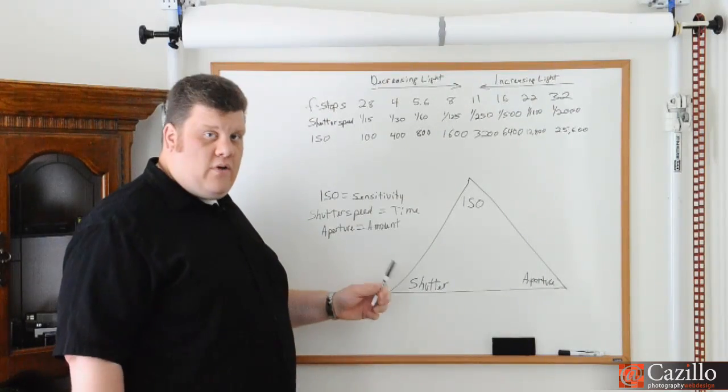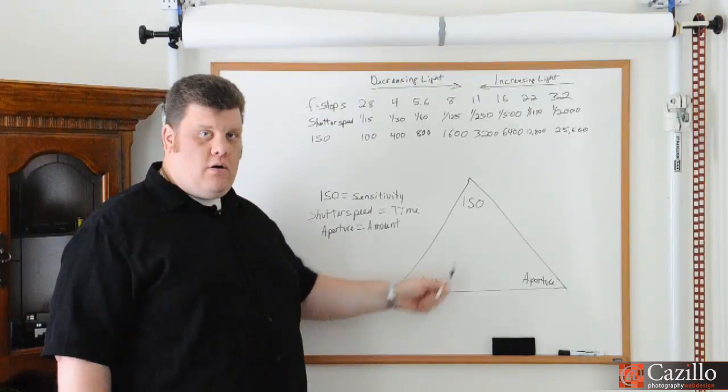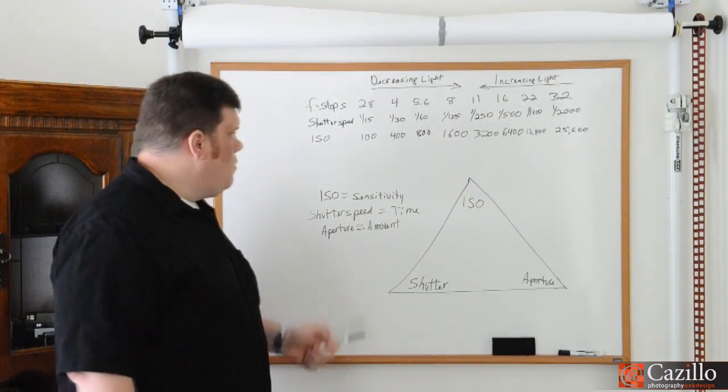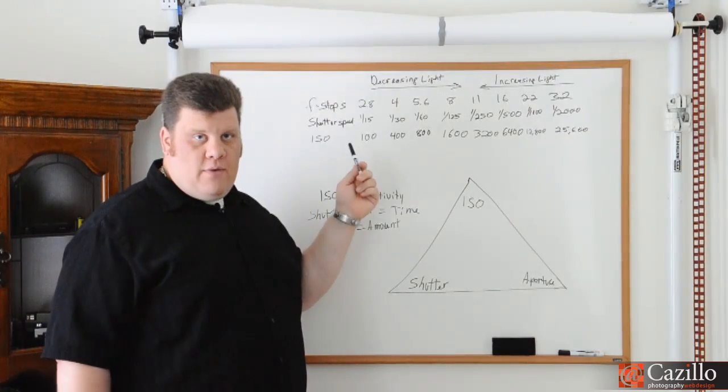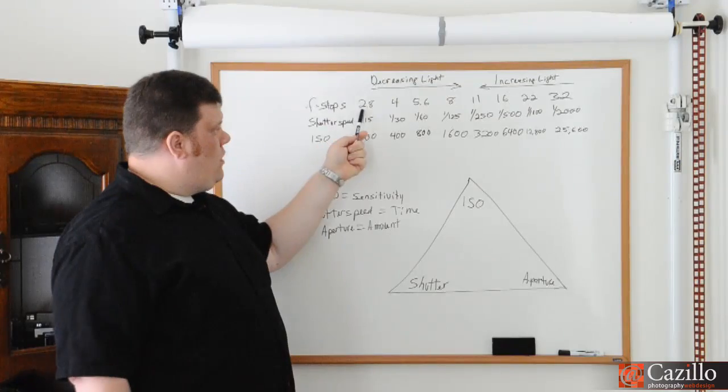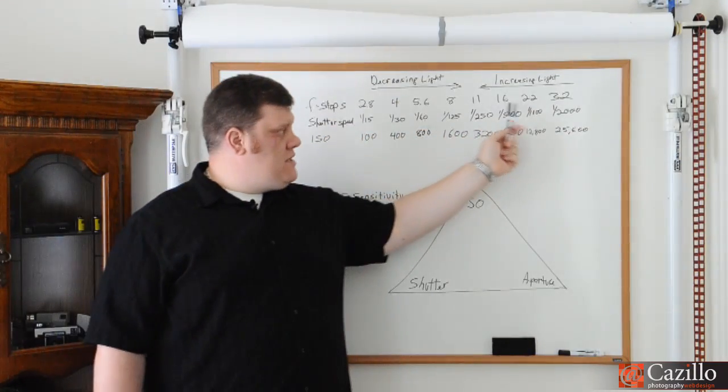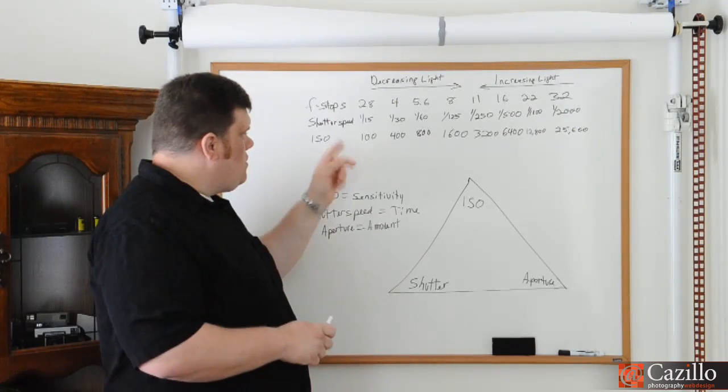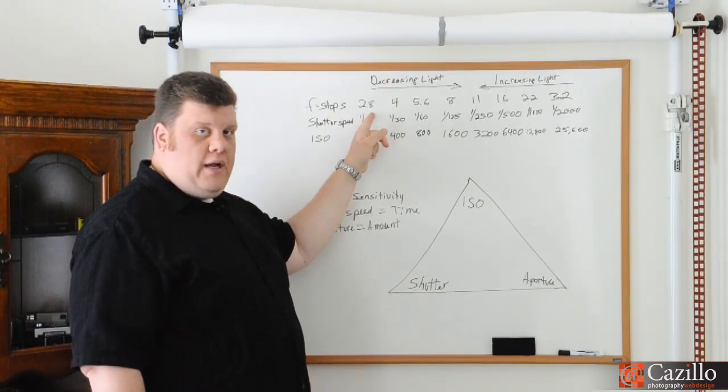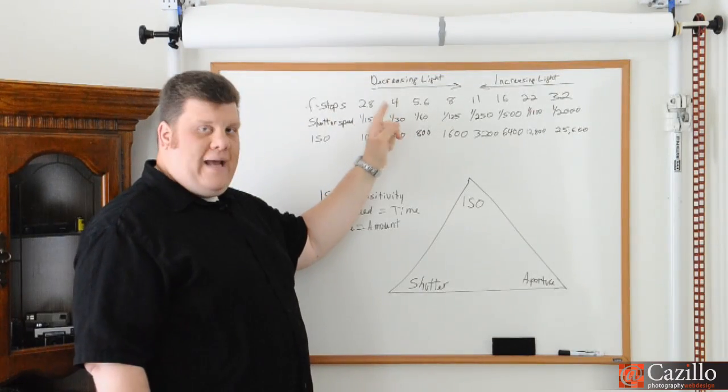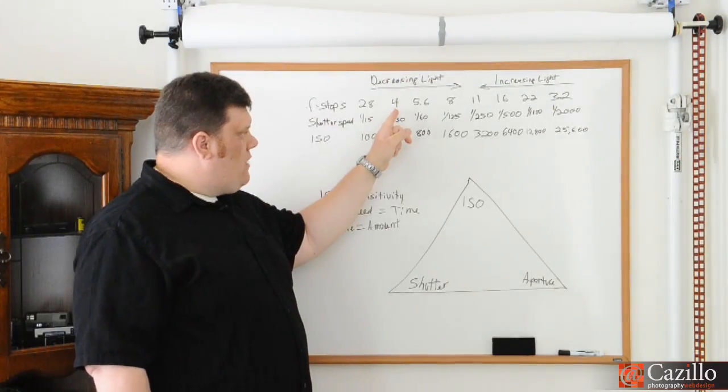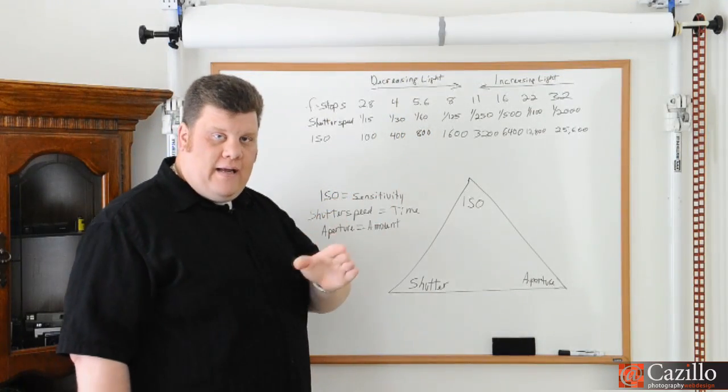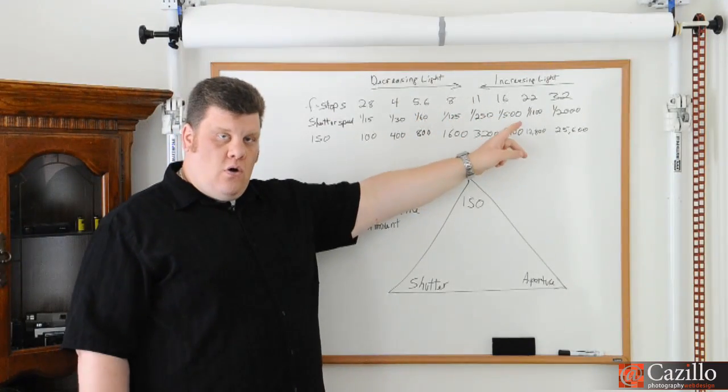Alright, so we have our triangle. One is affecting one part, it's also affecting another part, and might affect the other part. How does that work? Well, these are our primary settings up here. We have 2.8 in our F-stops, F4, 5.6, 8, 11, 16, 22, 32. Those are our primary F-stops. What those are telling us is that when we go from F2.8 to F4, we're halving the amount of light. Then when we go from F4 to F5.6, we're halving it again. So we're cutting it in half every time we do one of these major stops all the way down the scale.